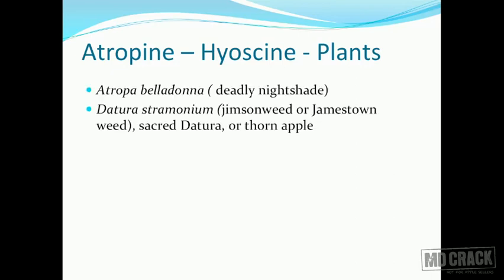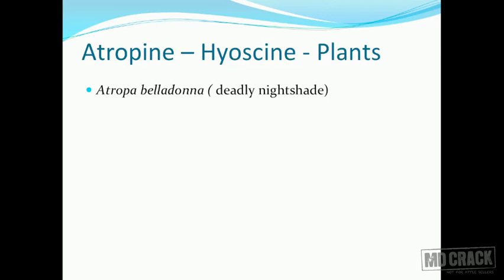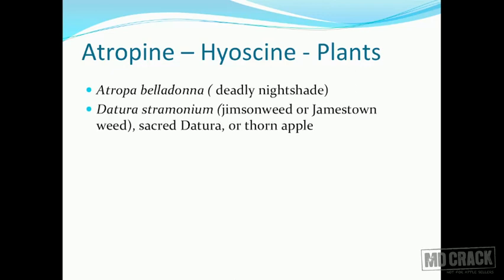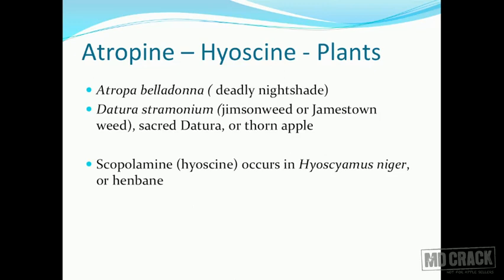Atropine and hyoscine are obtained from specific plants. Atropine is obtained from Atropa belladonna, also called deadly nightshade, and also from Datura stramonium — Jameson weed — or thorn apple. Scopolamine or hyoscine occurs in Hyoscyamus niger, also known as henbane.